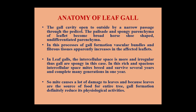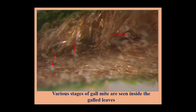These mites cause a lot of damage to leaves, and since leaves are the main source of food for the entire tree, gall formation definitely reduces the physiological activity of the plant. The image shows various stages of gall mites seen inside the gall leaves.